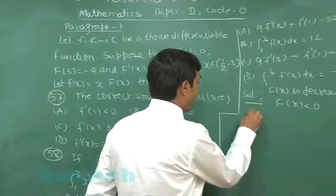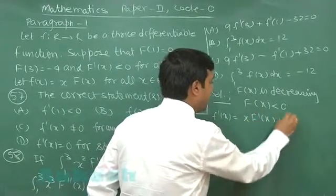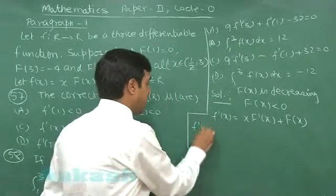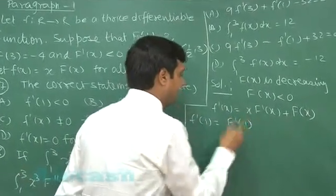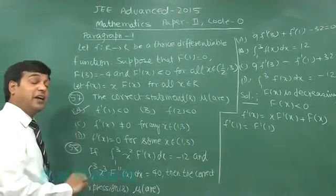Now small f has relation with capital F. On differentiating, giving me x F dash x plus F of x. On substituting one, we get f dash 1 equals capital F dash 1.